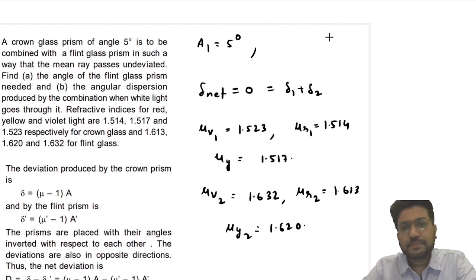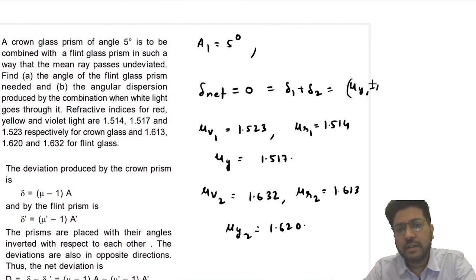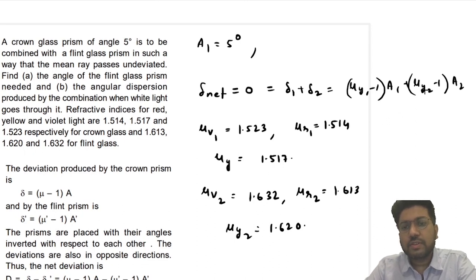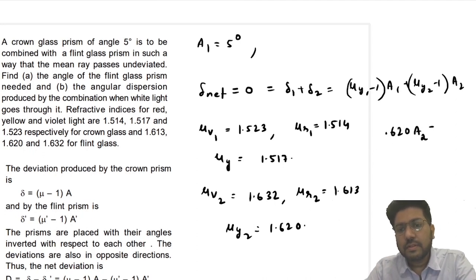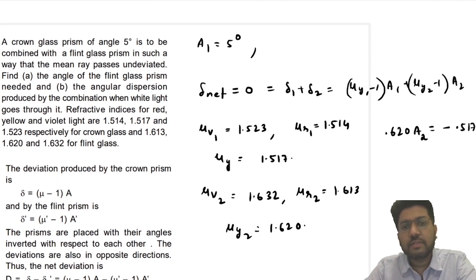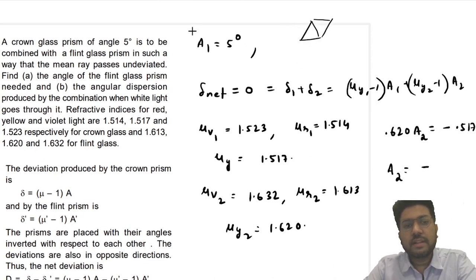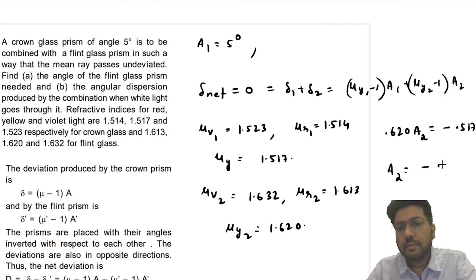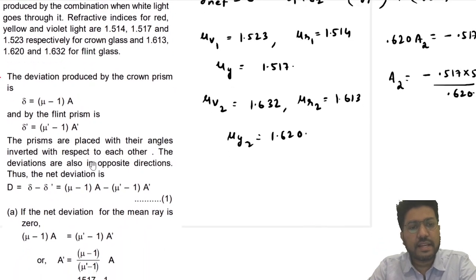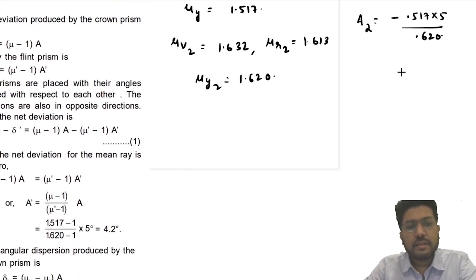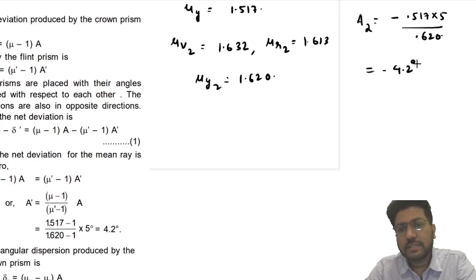So the condition is δ₁ + δ₂ = (μ_y1 − 1)·A₁ + (μ_y2 − 1)·A₂ = 0. So 0.620·A₂ = −0.517 × 5. From this, A₂ = −(0.517 × 5)/0.620 = −4.2°. The minus represents opposite orientation. So we have got the value of A₂.